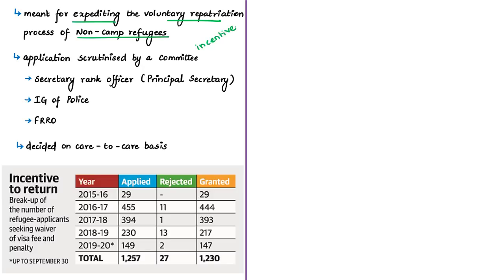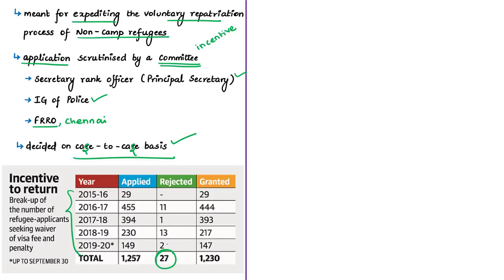For the process, a refugee from Sri Lanka who would like to return voluntarily applies for the waiver. The application is scrutinized by a committee comprising a secretary-level officer in the state government, a police officer of inspector general rank, and the Foreigners Regional Registration Officer of the concerned jurisdiction. For refugees staying in Tamil Nadu, the authority is the Foreigners Regional Registration Officer, Chennai. Beneficiaries are decided on a case-to-case basis. Since 2015-16, around 27 applications were rejected and only around 1,200 non-camp refugees have received the waiver over approximately four years.